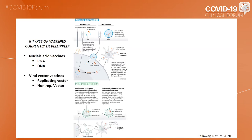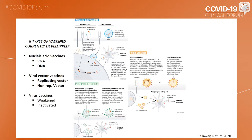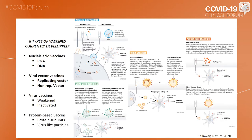The second type of vaccine are the ones with viral vectors — replicating vectors or non-replicating vectors. The third is the various vaccines with weakened or inactivated vaccines. And finally, the protein-based vaccines: protein subunits or virus-like particles.